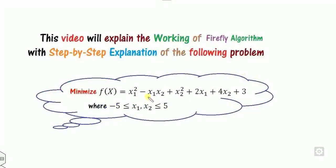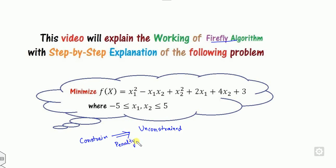In this video I will explain the functionality of the Firefly algorithm with the help of an unconstrained optimization problem. If your problem is a constrained optimization problem, you have to convert it into an unconstrained optimization problem with the help of the penalty function, and then you can apply the Firefly algorithm. Otherwise, you can use other algorithms already discussed — PSO, ABC, Cuckoo Search, TLBO, SGO — and all those videos are available in the description.